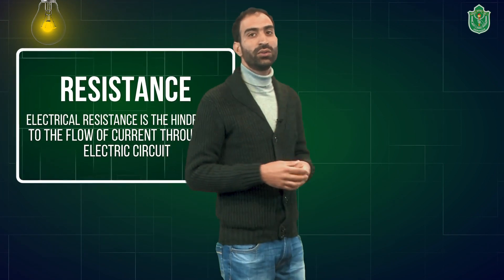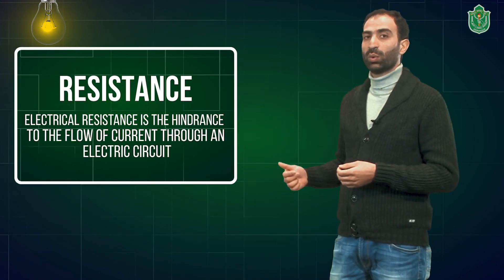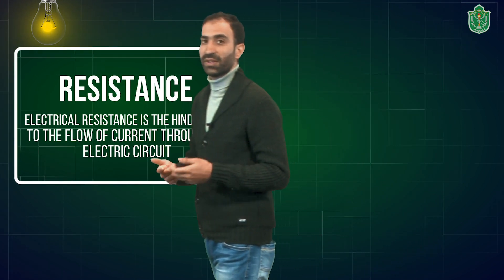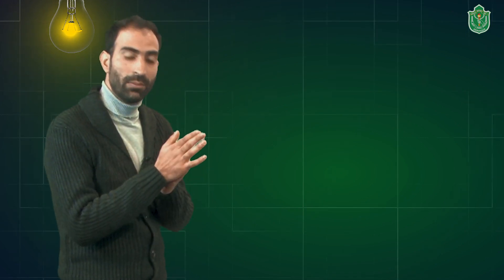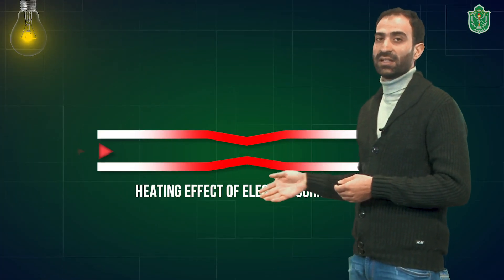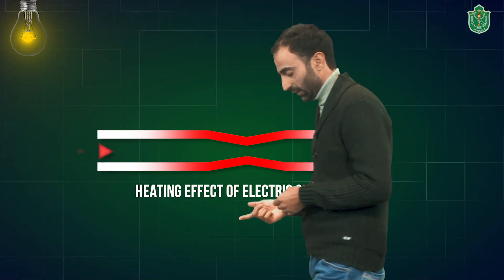This hindrance or obstruction that is offered by an electrical conductor to the flow of electricity is known as electrical resistance. This resistance is similar to the frictional force. Whenever we rub our palms against each other, some heat is generated. Similarly, whenever electricity passes through an electric conductor, the conductor gets heated up and this effect is known as the heating effect of electric current.